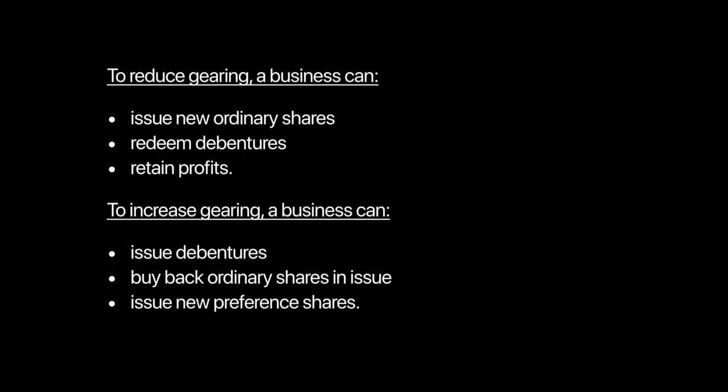If a company is highly geared and you need to advise how to reduce gearing, there are three main approaches. First, issue new ordinary shares — this increases the denominator and brings gearing down. Second, redeem debentures or loans to reduce fixed cost capital. Third, retain profits — if the company does not distribute profits as dividends, equity increases, which reduces gearing.